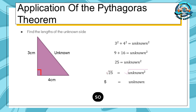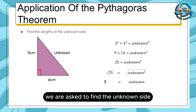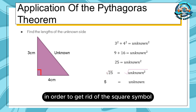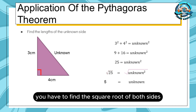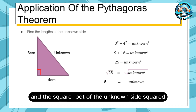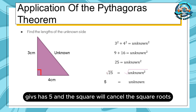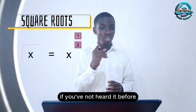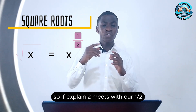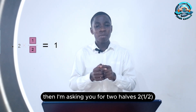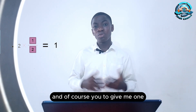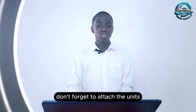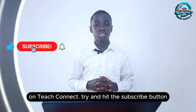You are not asked to find the square of the unknown side, so in order to get rid of the square symbol you have to find the square root of both sides. The square root of 25 gives us five, and the square root of the unknown squared cancels the square — because a square root means power one over two, and when you multiply power two by power one over two you get one, so the unknown to the power of one is just the unknown. Therefore our unknown side is five centimeters — don't forget to attach the units.